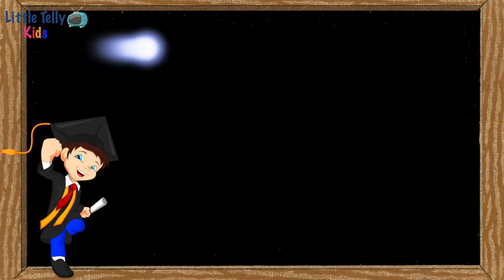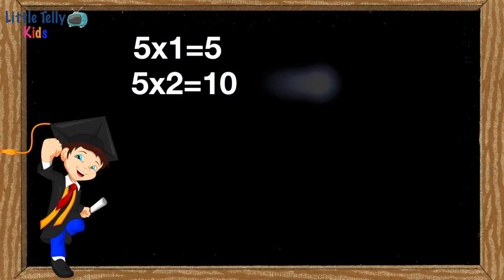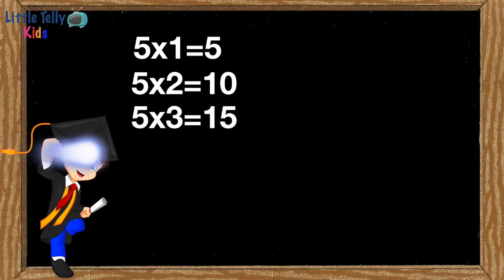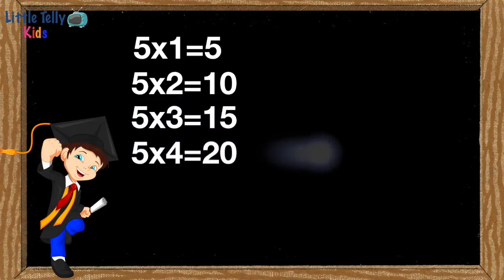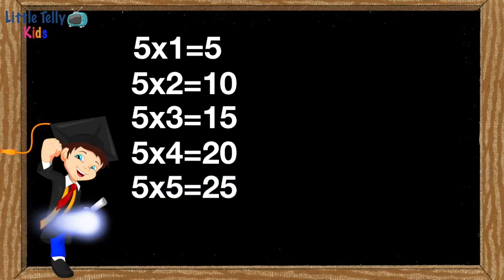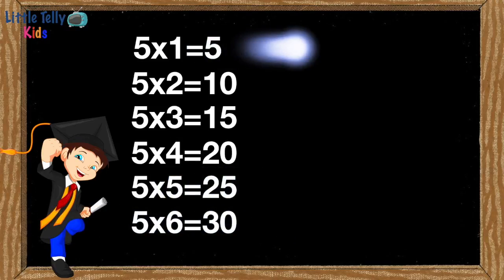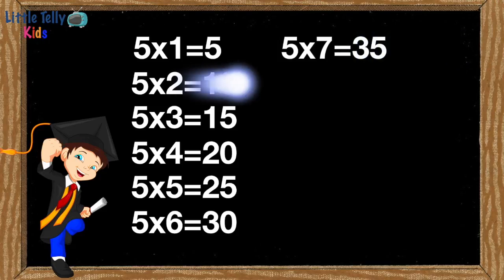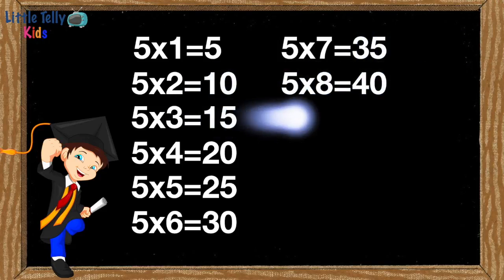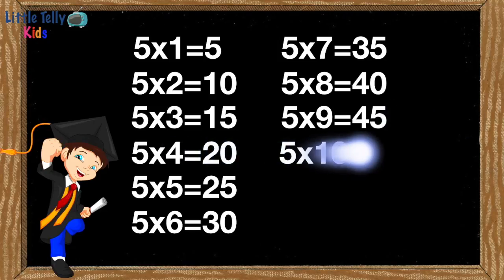5 1s are 5, 5 2s are 10, 5 3s are 15, 5 4s are 20, 5 5s are 25, 5 6s are 30, 5 7s are 35, 5 8s are 40, 5 9s are 45, 5 10s are 50.